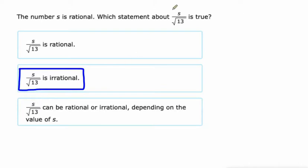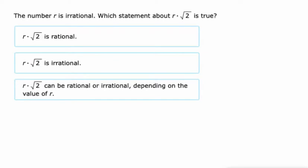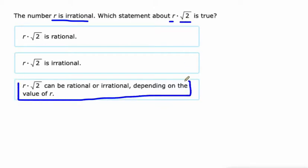Now, if it was irrational divided by irrational, that's a maybe. Kind of like this, where they say R is irrational, so we're doing irrational times irrational — that's a maybe. If R is square root of three, then square root of three times square root of two is square root of six, which is still irrational. But if R is square root of 50, then square root of 50 times square root of two is the square root of 100, which is rational, because square root of 100 is 10.